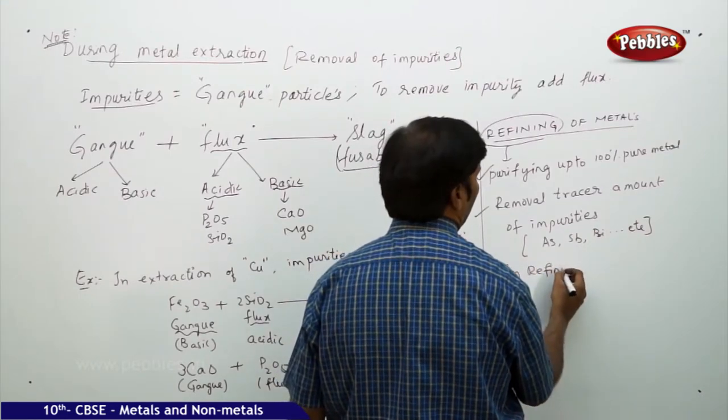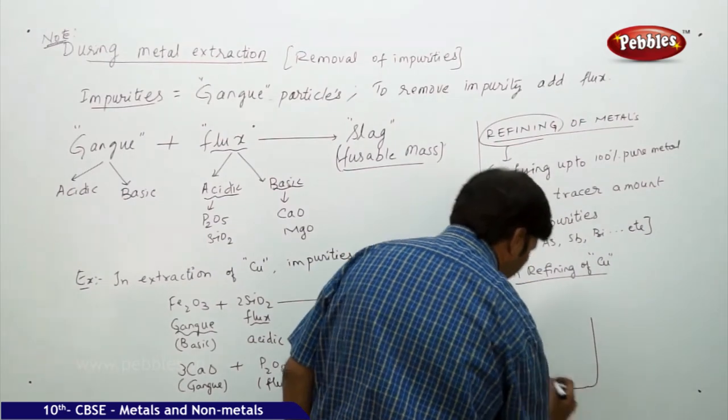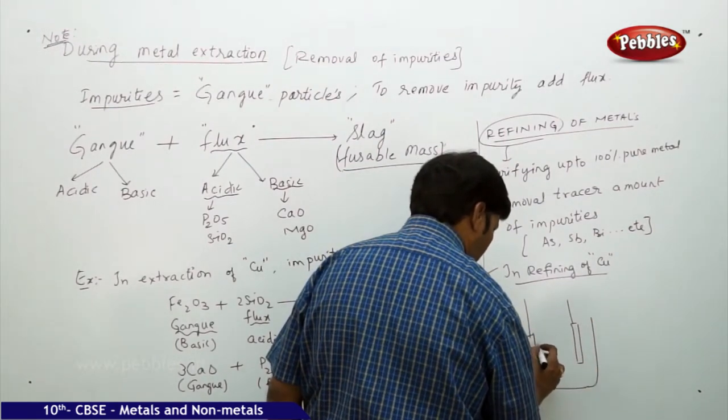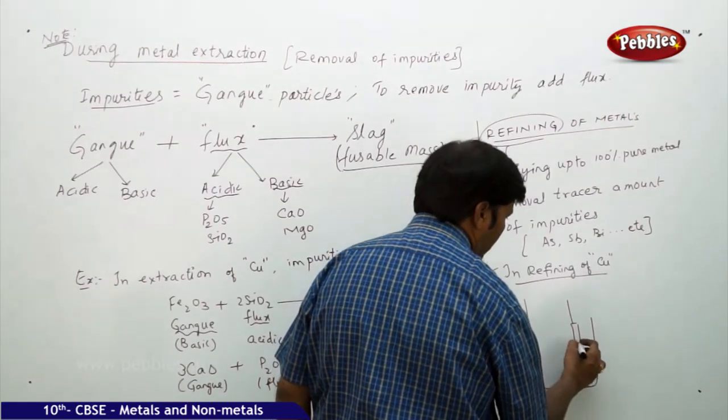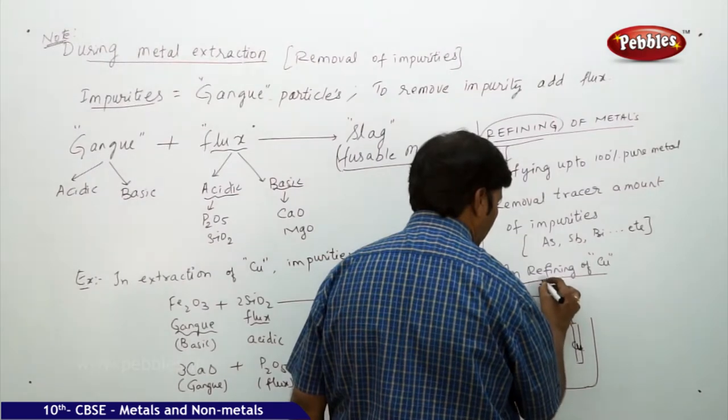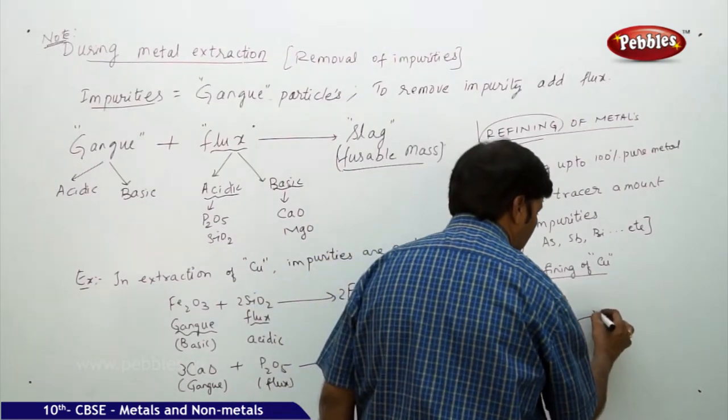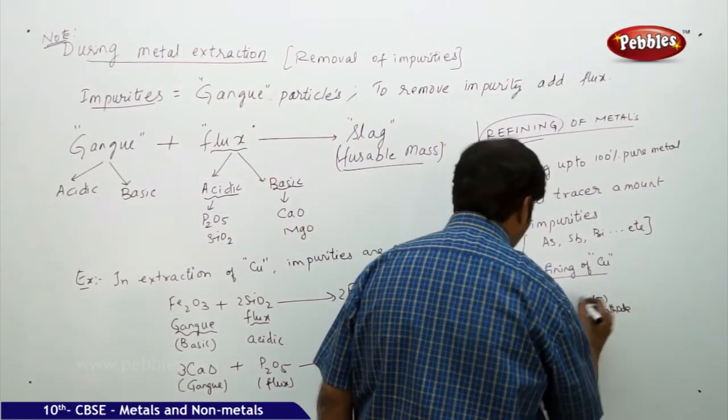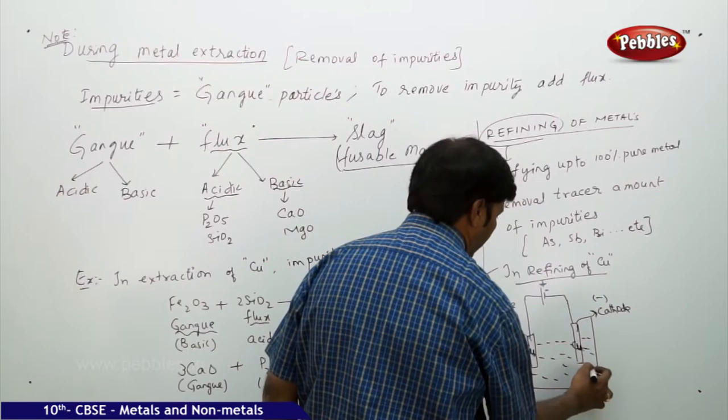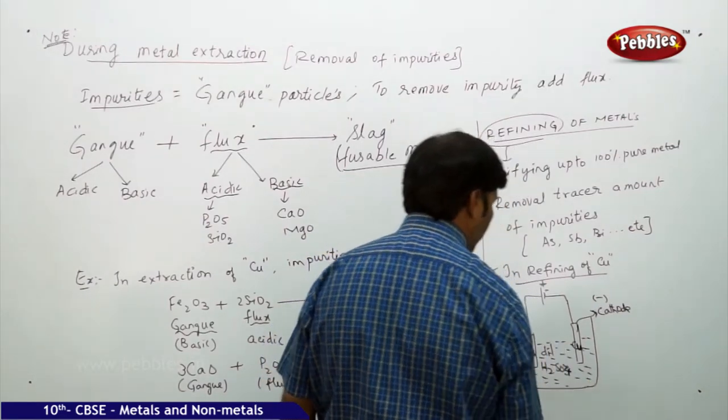In refining of copper, which is obtained, what we do is, we just take a vessel, in which we take two electrodes, one anode electrode and one cathode electrode, one copper electrode, one is copper electrode, and the one is another copper electrode, and we connect it to the battery, and one is acting as anode electrode, and another one is acting as cathode electrode. Cathode is given by negative sign convention, anode is given by positive sign convention, and we fill it with the copper sulphate, we fill it with dilute sulphuric acid, dilute H2SO4.